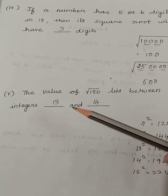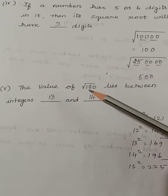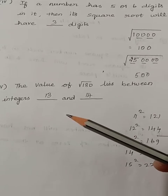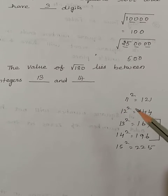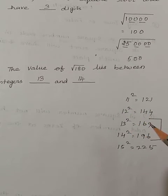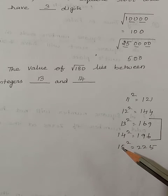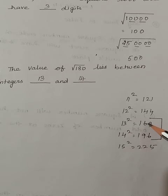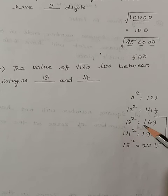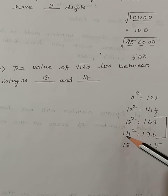Next is Roman letter 5. The value of root 180 lies between integers. So we have to find the square root of 180. We know that 11 square is 121, 12 square is 144, 13 square is 169, 14 square is 196, 15 square is 225. We have to find where 180 lies between. So 180 lies between 13 square and 14 square. Here the answer is 169 and 196. So 180 lies between 169 and 196, meaning the square root of 180 lies between the integers 13 and 14.